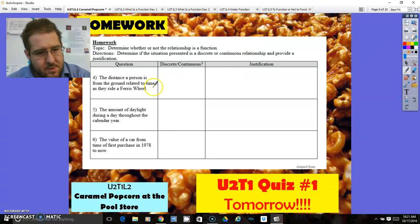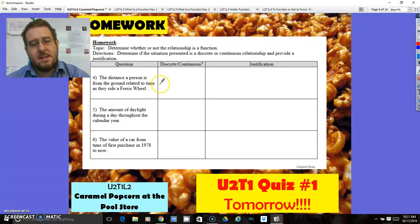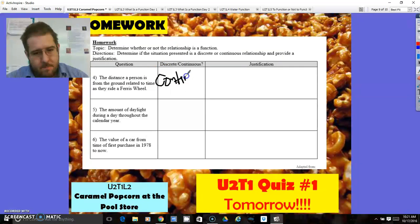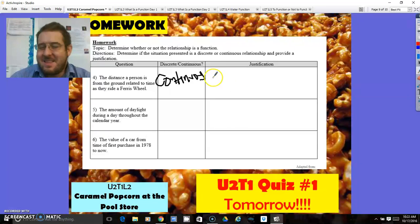So the homework, discrete versus continuous. It's just a person from the ground related to the time as they ride a Ferris wheel. The person's height will always have a height, whether it's been a half a time around or a quarter of a time around the Ferris wheel. So that is definitely continuous. You do have a height the entire time you're going around a Ferris wheel, no matter if you've gone around one time, two times, or three and a half times. If a half makes sense, it's continuous.